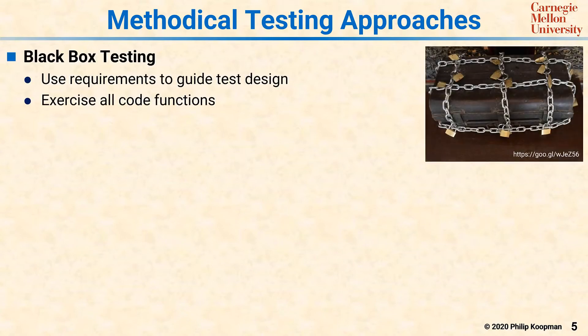In contrast to the unstructured testing approaches are the methodical testing approaches, which we'll call black box and white box testing. Black box testing involves using the requirements to guide test design and exercising all the code functions based on the requirements and functionality of the system.